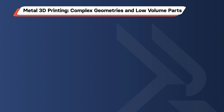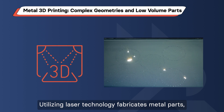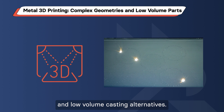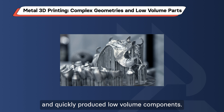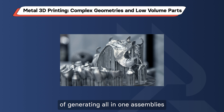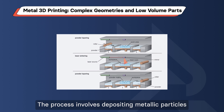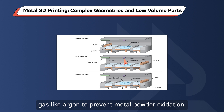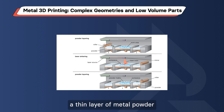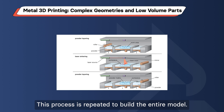Metal 3D Printing – Complex Geometries and Low-Volume Parts. Utilizing laser technology, metal 3D printing fabricates metal parts commonly used for prototypes and low-volume casting alternatives. It excels in crafting intricate, cost-effective, and quickly produced low-volume components, and is capable of generating all-in-one assemblies and complex geometries challenging with standard tooling. The process involves depositing metallic particles step by step in a chamber filled with inert gas like argon to prevent metal powder oxidation. A thin layer of metal powder is spread over the build platform, and a laser scans the component's cross-section, fusing metal particles to form a layer. This process is repeated to build the entire model.